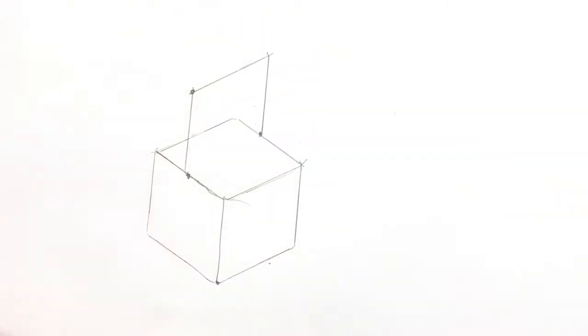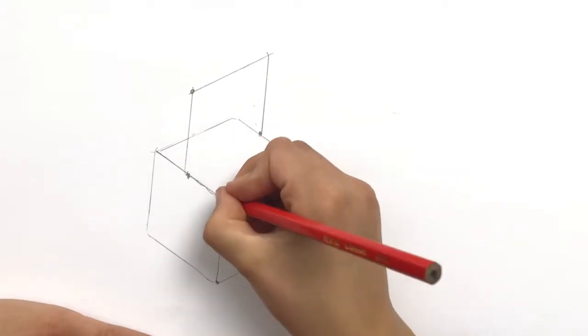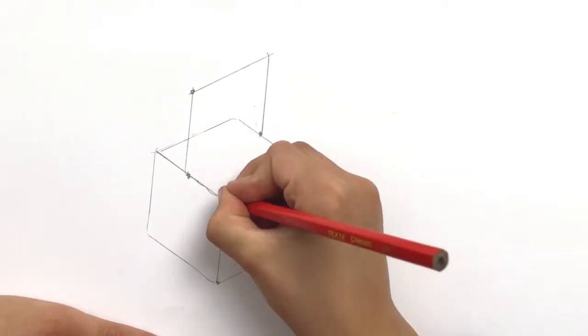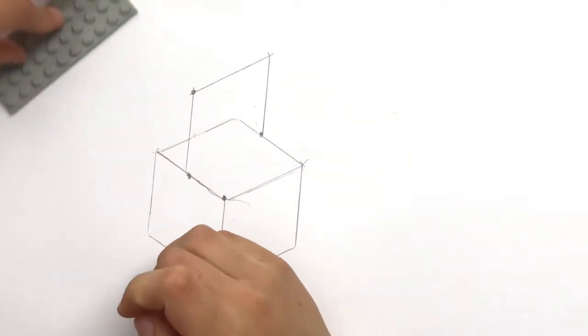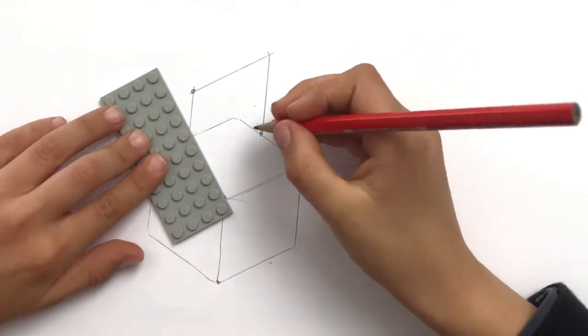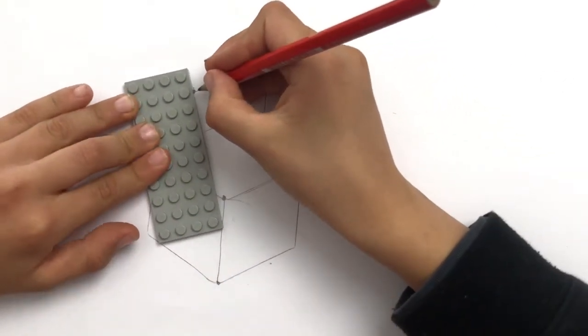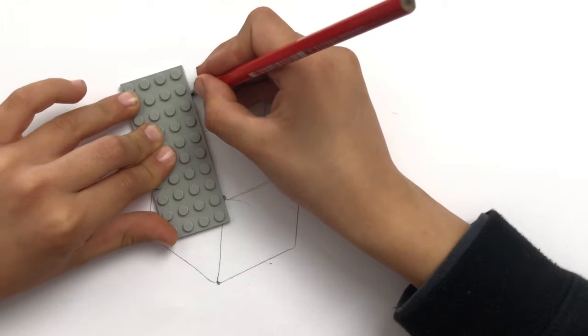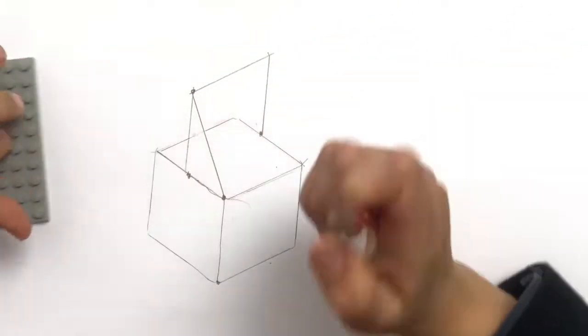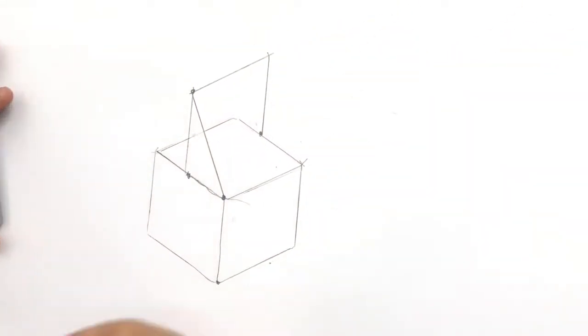He's placing a dot. That'll be the center or the top of the roof and another dot on the edge of the cube. Now use your rule to join those together with the line and we're going to make a copy of that line at the far edge.